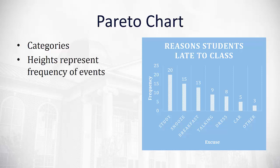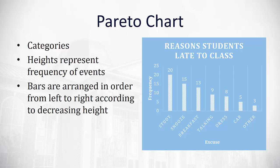You can see in this graph that the heights represent the frequency of each of those category events, similar to a histogram — except on a histogram we're looking at a range of quantitative values. With a Pareto chart we're looking at qualitative data in categories, and the bars are always arranged in order from left to right according to decreasing height.